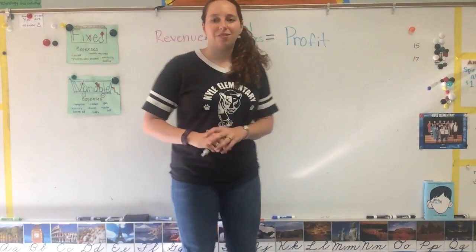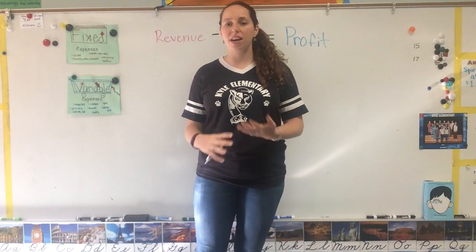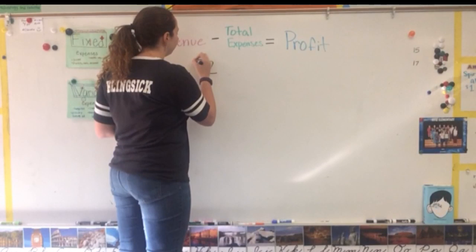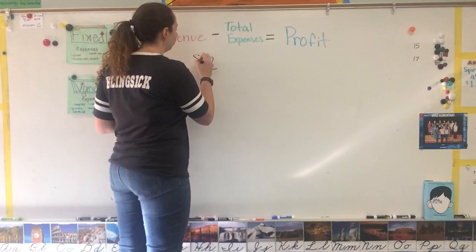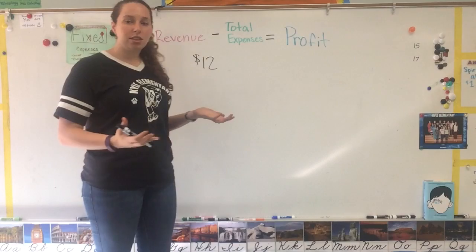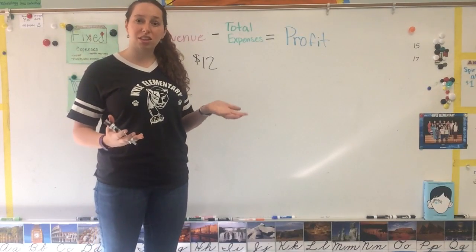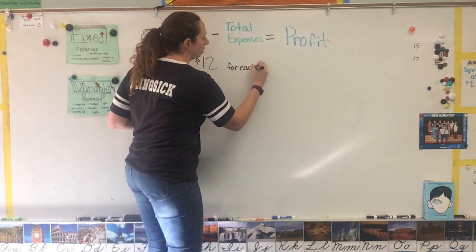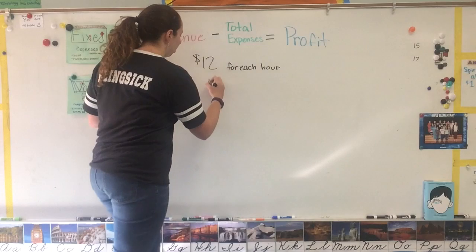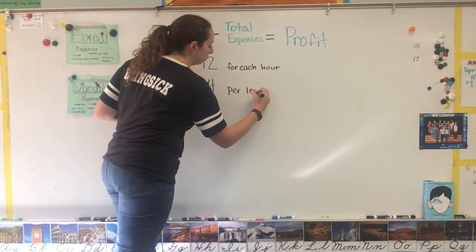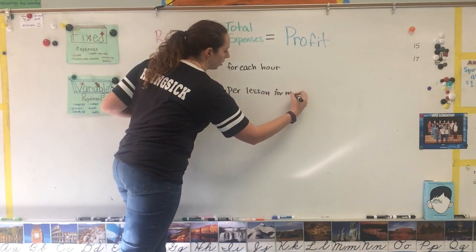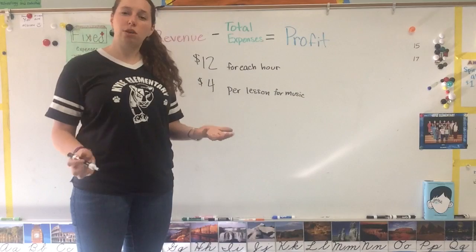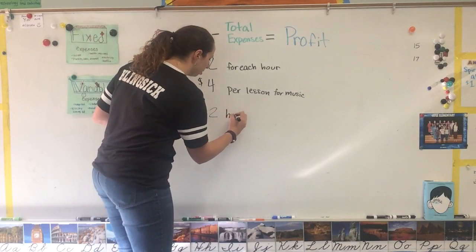Let's do an example problem. Let's pretend Mr. K does trombone lessons and he charges $12 per hour — warning, this problem may help you with your homework! He also has to buy music for his students. Each piece of music, one per lesson, costs $4. So that's $12 for each hour and $4 per lesson for music.